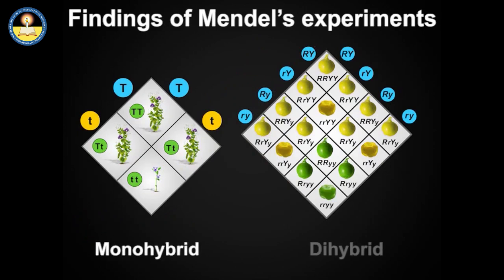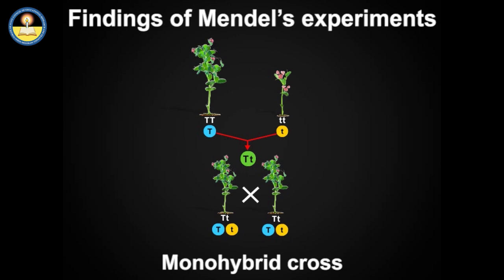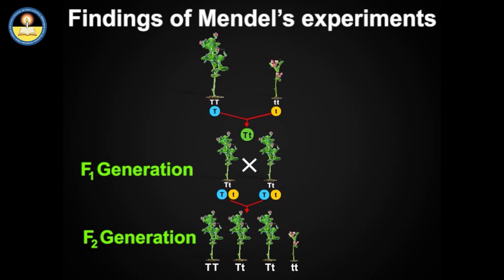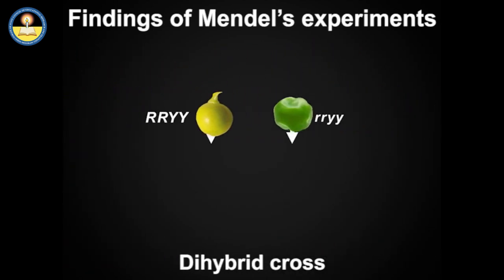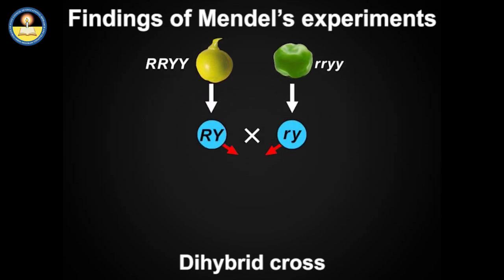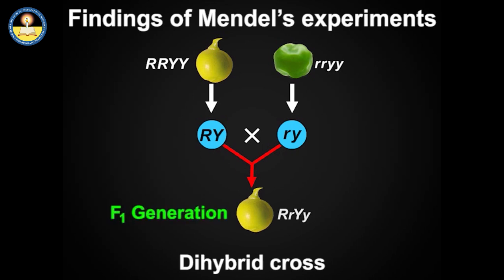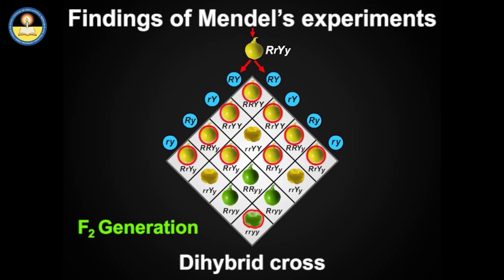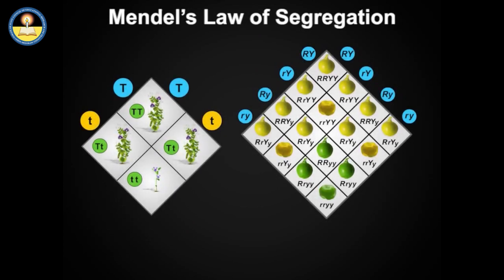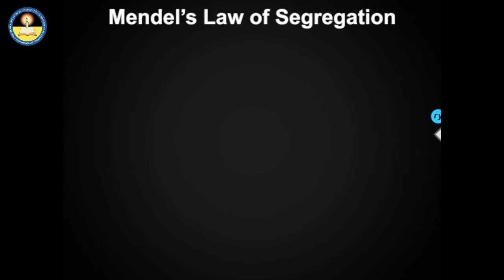Outcomes of monohybrid and dihybrid crosses done by Mendel. In a monohybrid cross, only one of the two contrasting traits appeared in F1 generation; however, in F2 generation, both parental traits appeared in a certain proportion. In a dihybrid cross, when two contrasting pairs of traits were checked simultaneously, only one parental combination appeared in F1 generation; however, in F2 generation raised by self-pollination, four combinations of traits appeared — two parental types and two new combinations. On the basis of these outcomes, Mendel coined several terms and formulated certain laws.